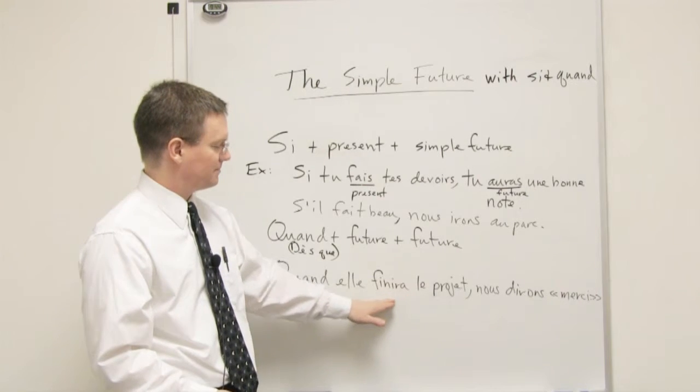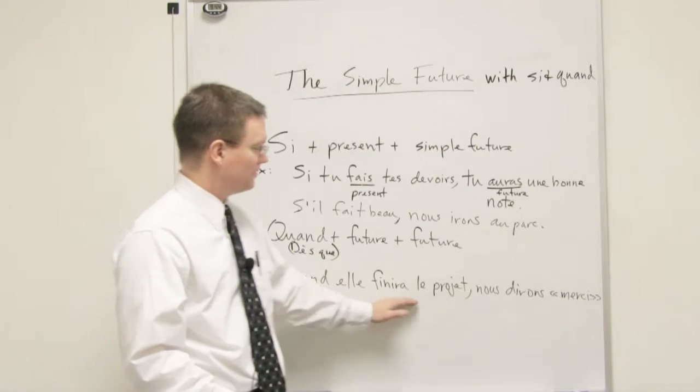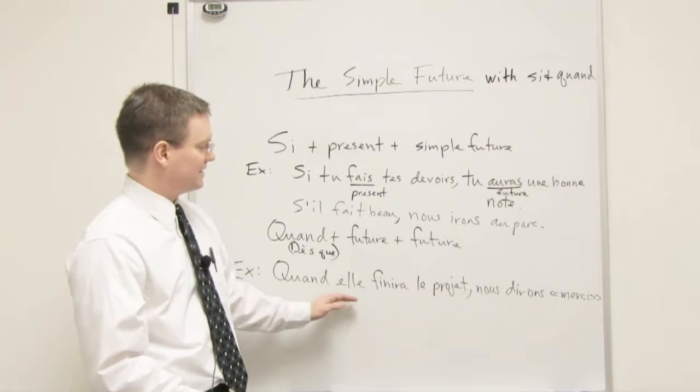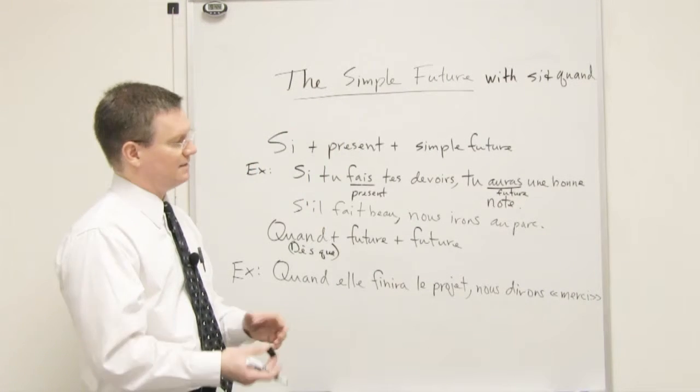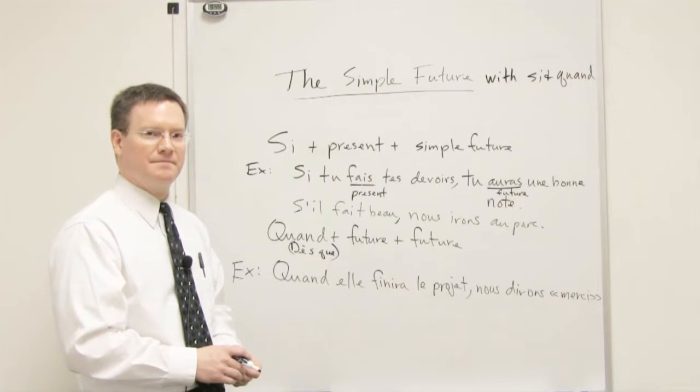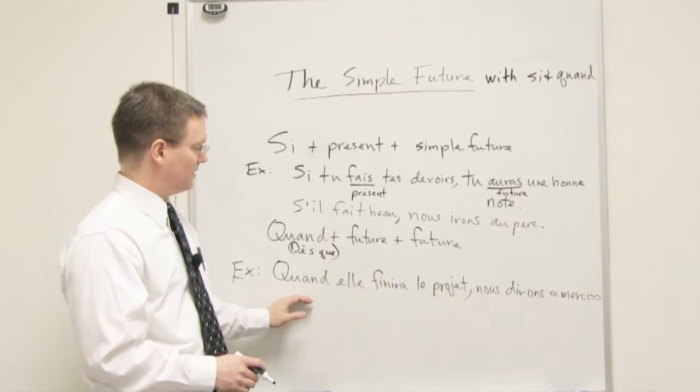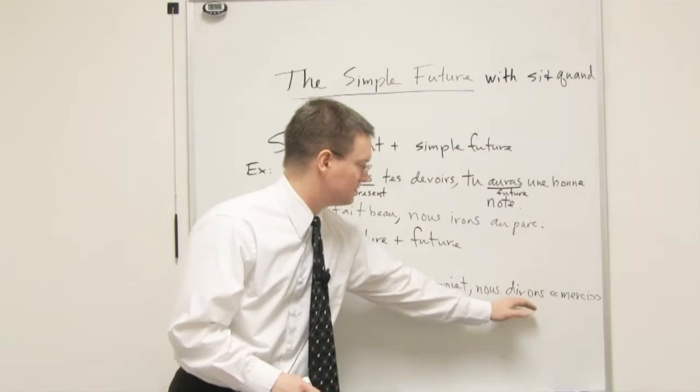Notice in English, this first verb is usually in the present, but in French, they're both in the future. And it's kind of this idea that these things will both happen around the same time in the future. So here we have when, and we have future, and future.